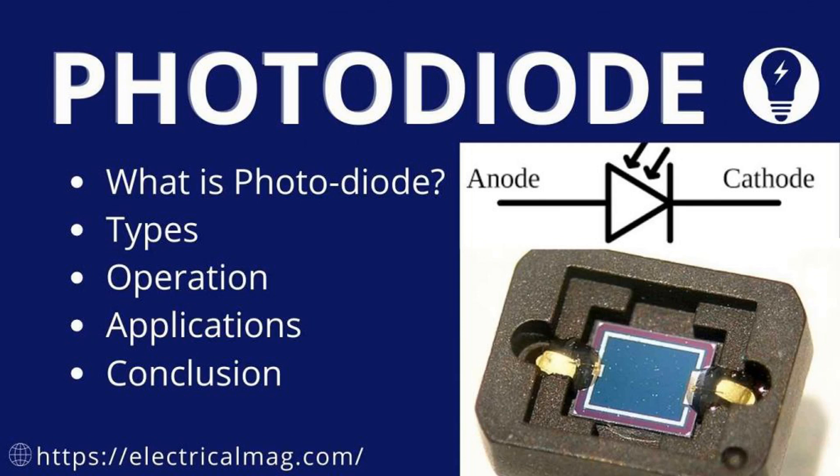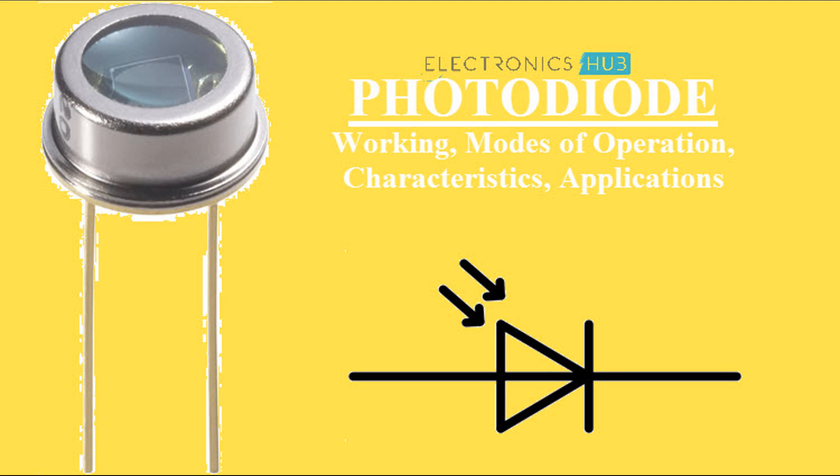Applications: Photodiodes are used in a wide range of applications due to their ability to accurately detect and measure light, including optical communication systems, medical devices, environmental monitoring, consumer electronics, industrial automation, and scientific instrumentation.